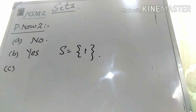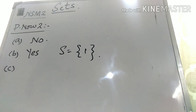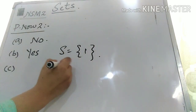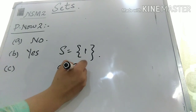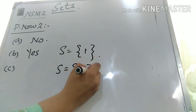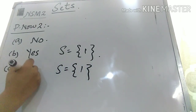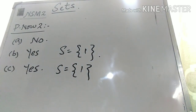Part C is: an English teacher in my school. They are talking about one teacher, which is a well-defined object — you can count it. So this is also a well-defined set, and we say yes. This is all about Practice Now 2; I hope it is clear to you.